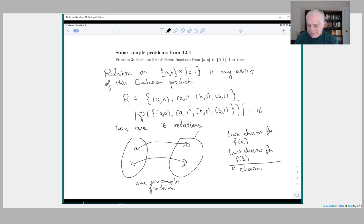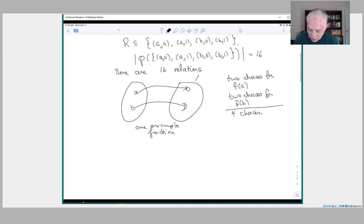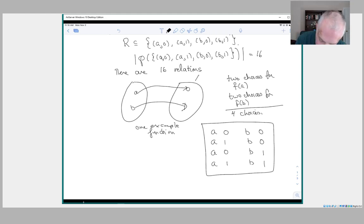But we're supposed to list them. So what are the possibilities? We can send A to 0 and B to 0. We can send A to 1 and B to 0. We can send A to 0 and B to 1. And we can send A to 1 and B to 1. So these are our four possible functions.